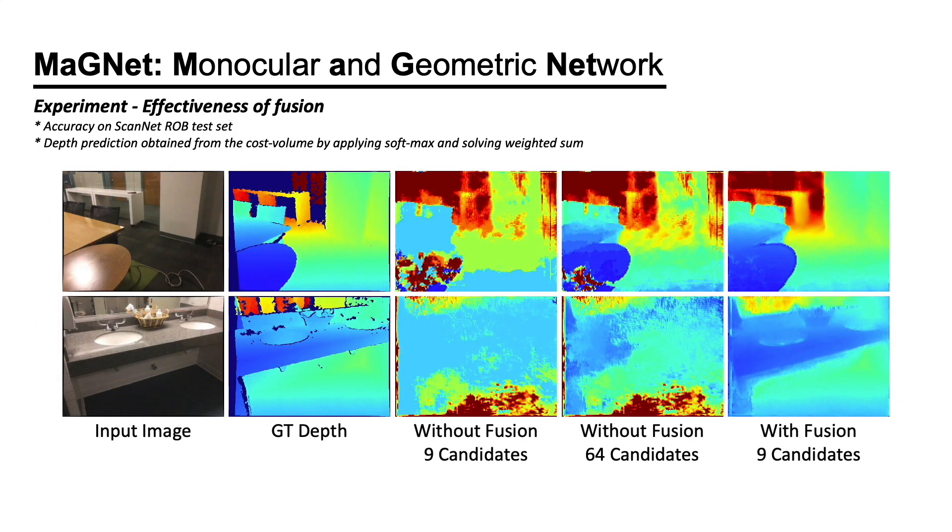Qualitatively, using single-view depth probability makes the prediction more robust against challenging artifacts such as reflective surfaces and textureless surfaces.